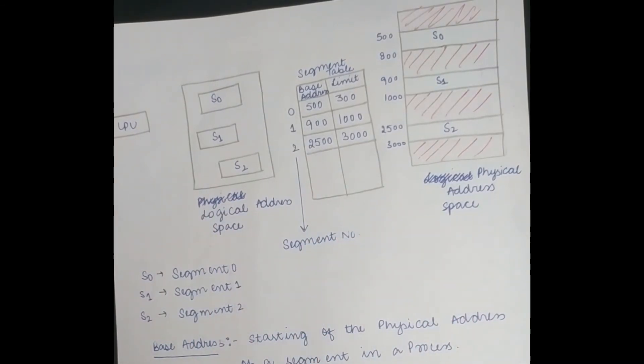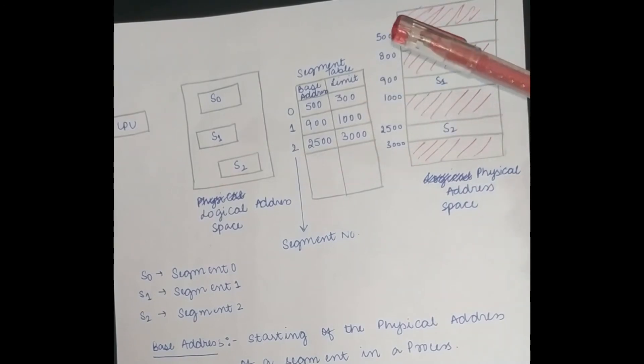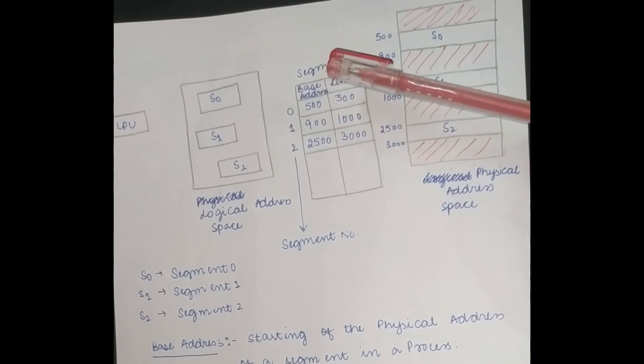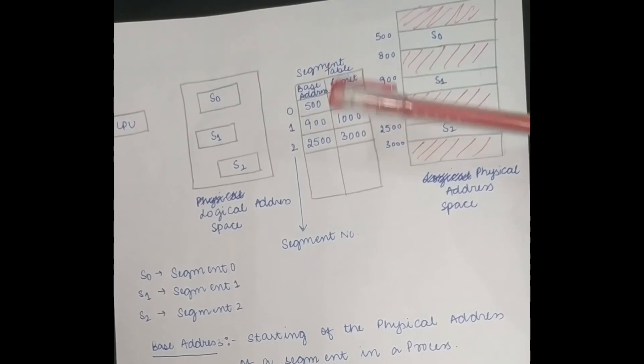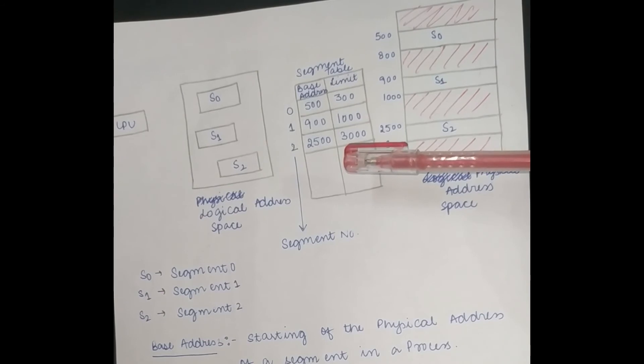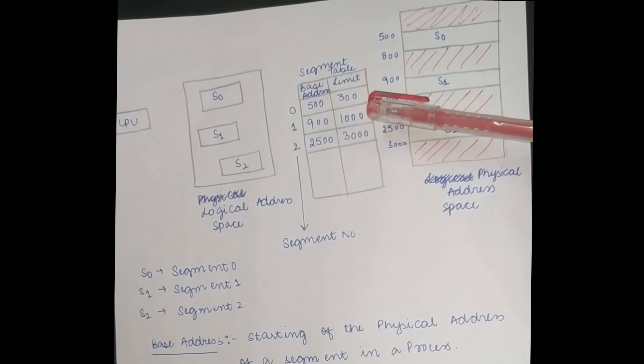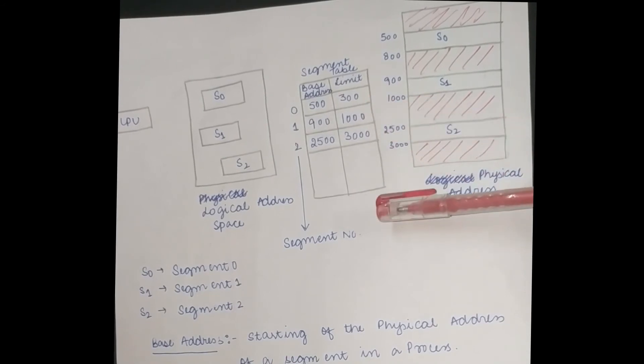Two parts are divided in the segment table: one is base address and the other is limit. Where is the base address? Which is the point or the address which is the process or the program starts, we call base address. Limit is the length of the total program, we call the limit.